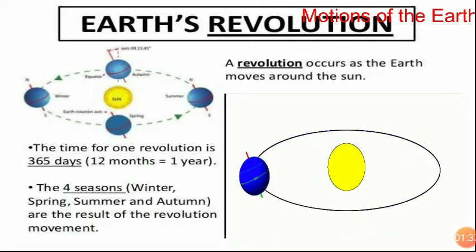The second motion of the earth is revolution. Revolution is the movement of the earth around the sun in a fixed orbit. Earth takes 365 one-fourth day to revolve around the sun.